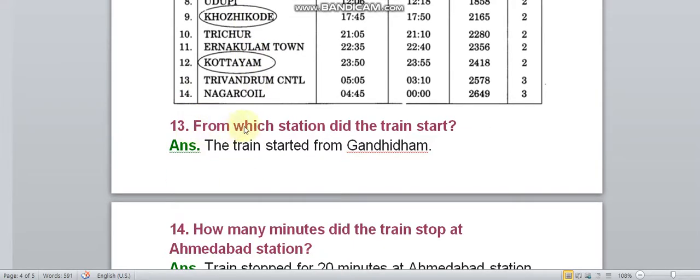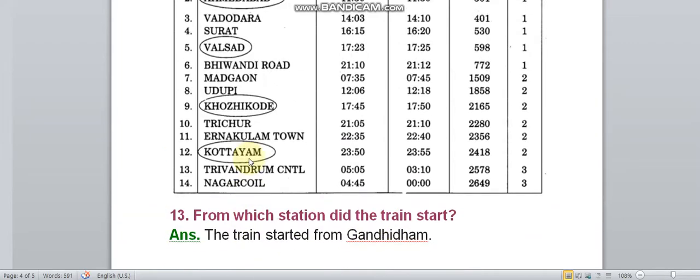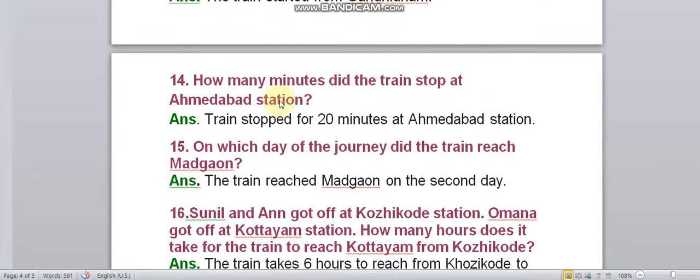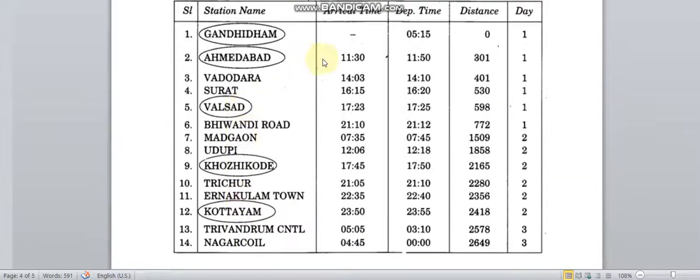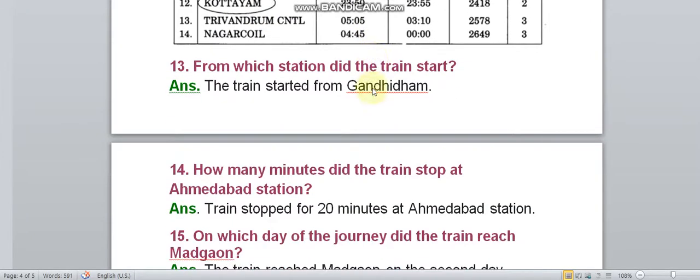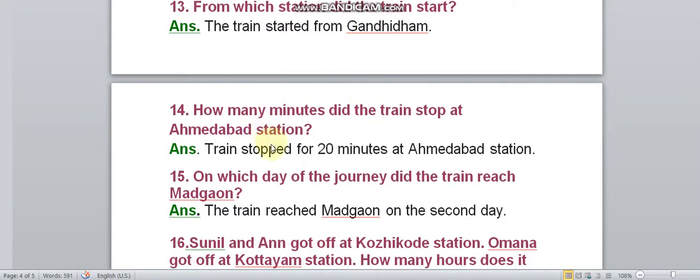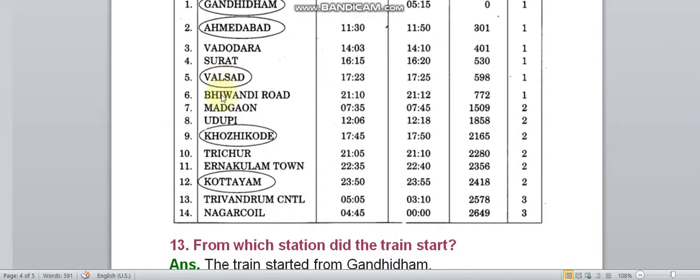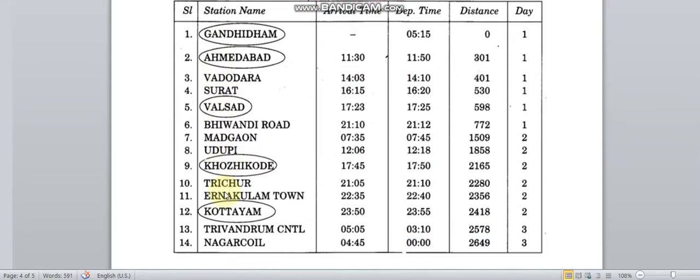From which station did the train start? The train started from Gandhidham. How many minutes did the train stop at Ahmedabad station? The train stopped for 20 minutes at Ahmedabad station. On which day of the journey did the train reach Madgaon? The train reached Madgaon on the second day.